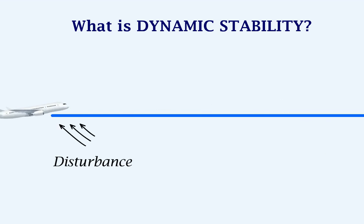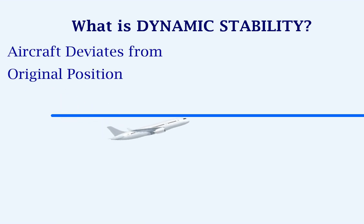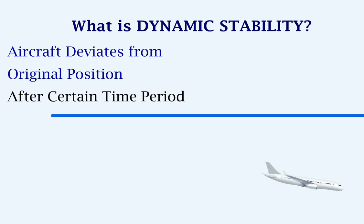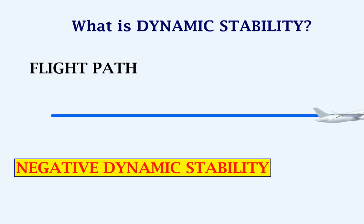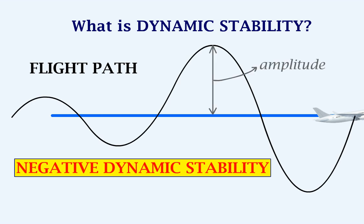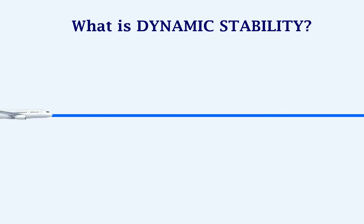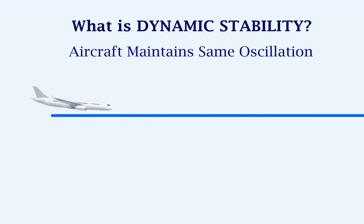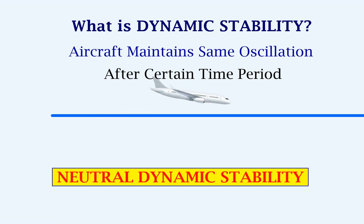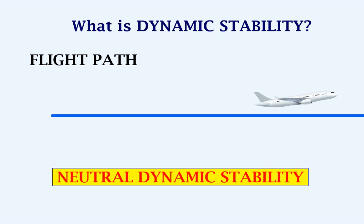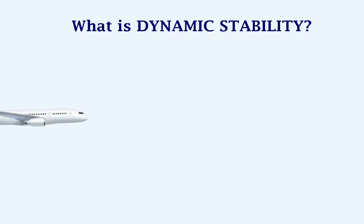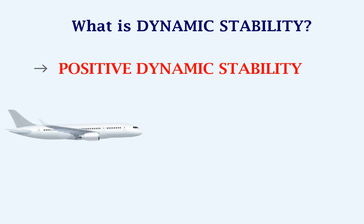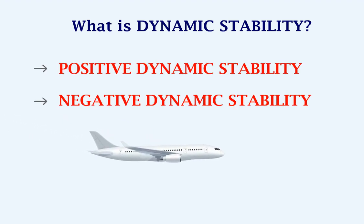In the case where, after the disturbance, the aircraft keeps deviating from its original position, then it is said to have negative dynamic stability. The flight path of this stability will look like this, with the amplitude of the oscillations being constant. So the dynamic stability of an aircraft can be divided into positive dynamic stability, negative dynamic stability, and neutral dynamic stability.